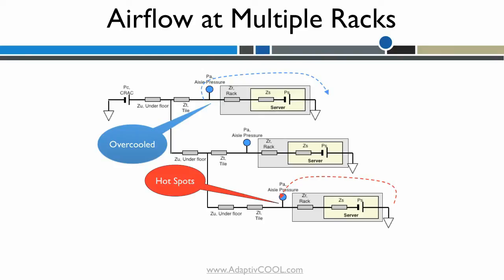At the third rack, the warm air from the hot aisle is pulled into the server leading to hot spots. At the first rack, the excess cold air spills into the hot aisle leading to wastage of cold air.